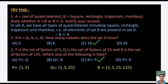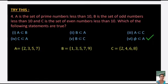P is the set of all factors of 5: P = {1, 5}. Q is the set of factors of 25: Q = {1, 5, 25}. R is the set of factors of 125: R = {1, 5, 25, 125}. Among the options given, R ⊆ P is false — it should be P ⊆ Q ⊆ R.